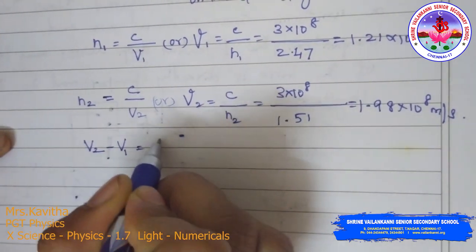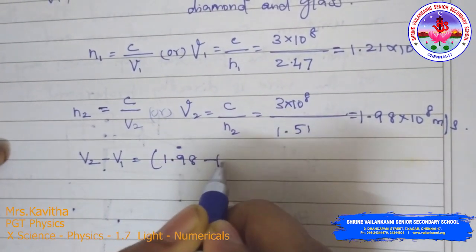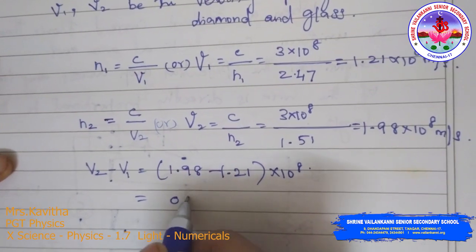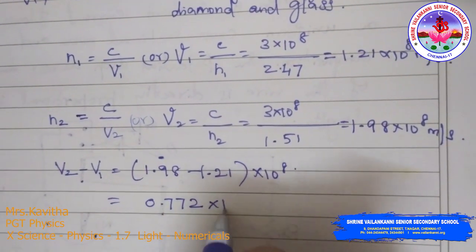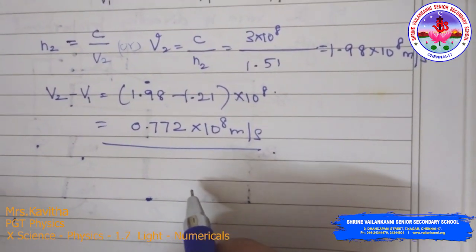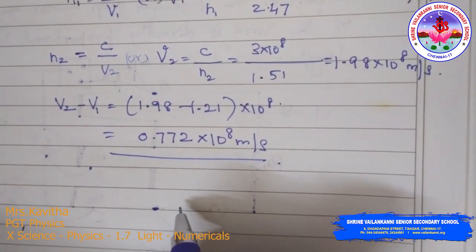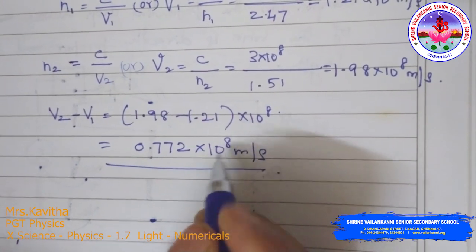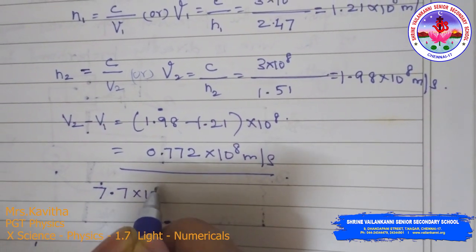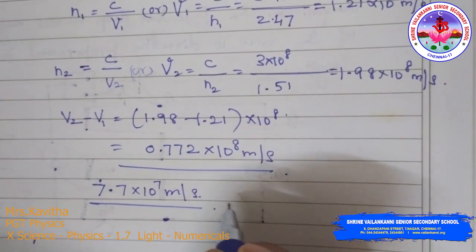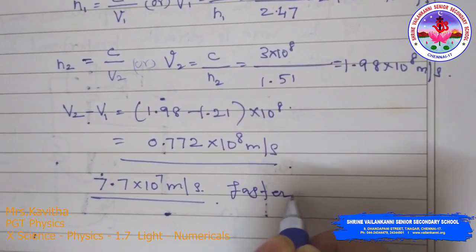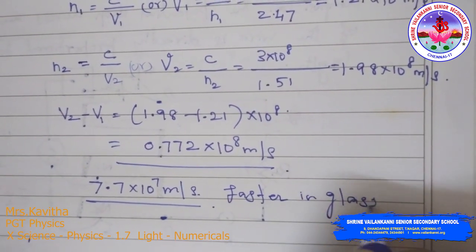V2 − V1 = (1.98 − 1.21) × 10⁸ = 0.77 × 10⁸ m/s = 7.72 × 10⁷ m/s. So light travels 7.72 × 10⁷ m/s faster in glass than in diamond.